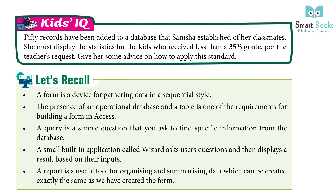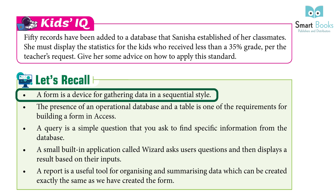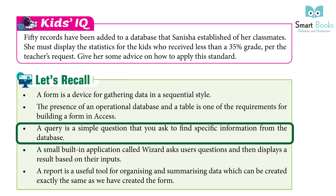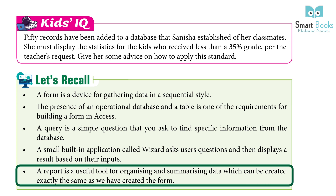Recap: A form is a device for gathering data in a sequential style. An operational database and table are required for building a form in Access. A query is a simple question you ask to find specific information from the database. The Query Wizard is a built-in application that asks users questions and displays results based on their input. A report is a useful tool for organizing and summarizing data, created the same way as a form.